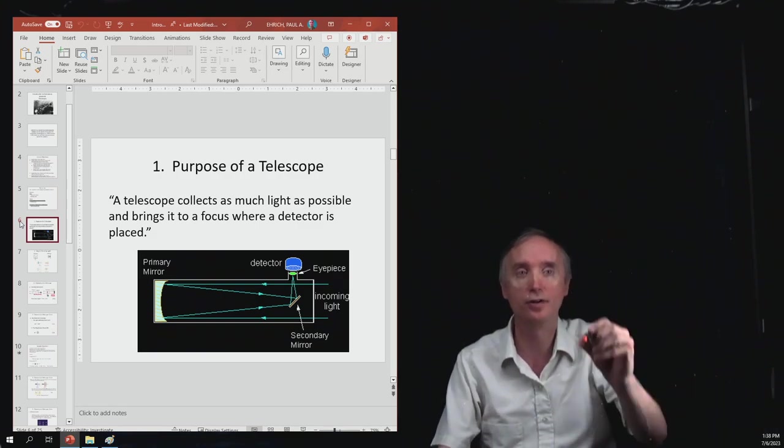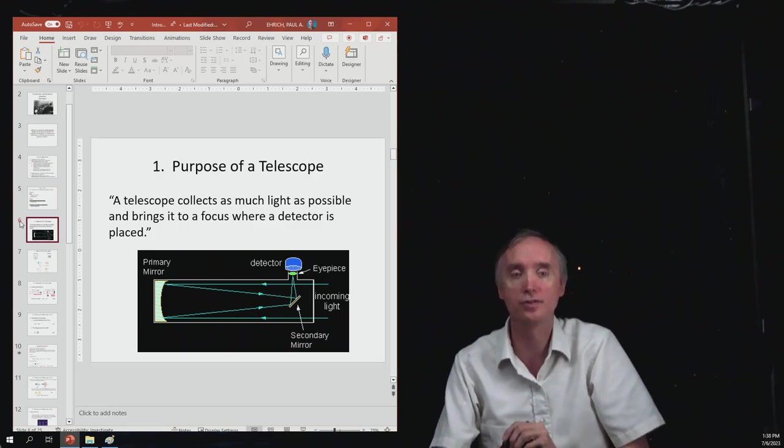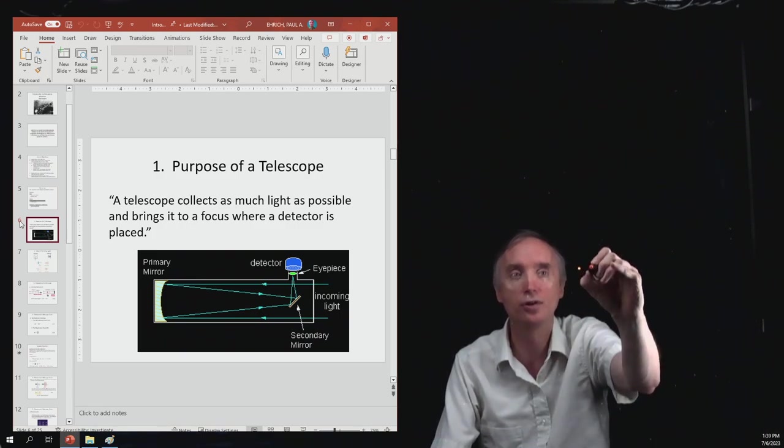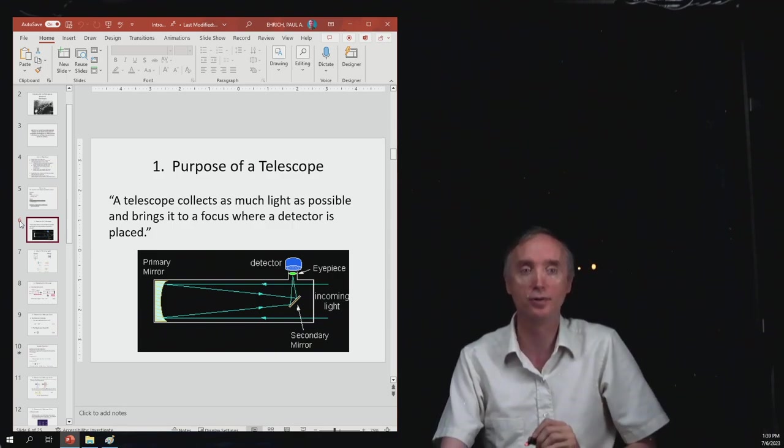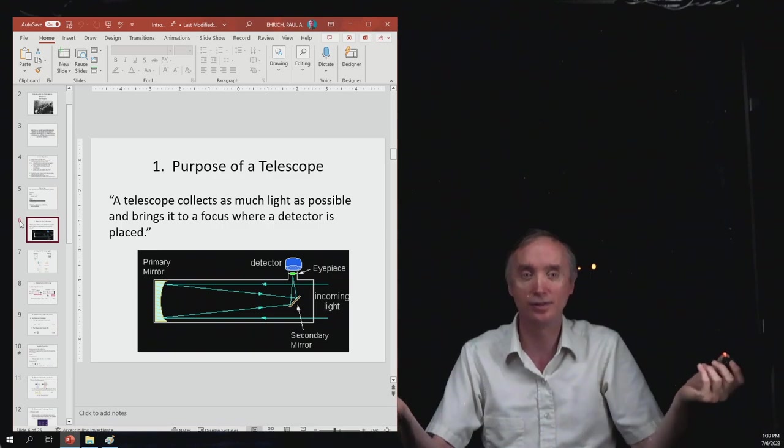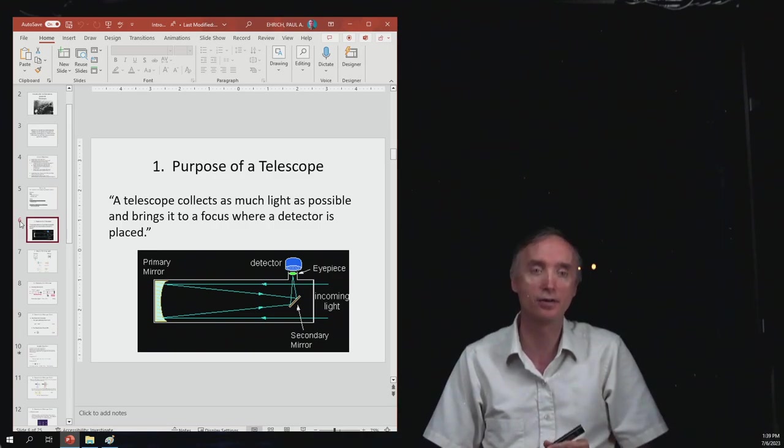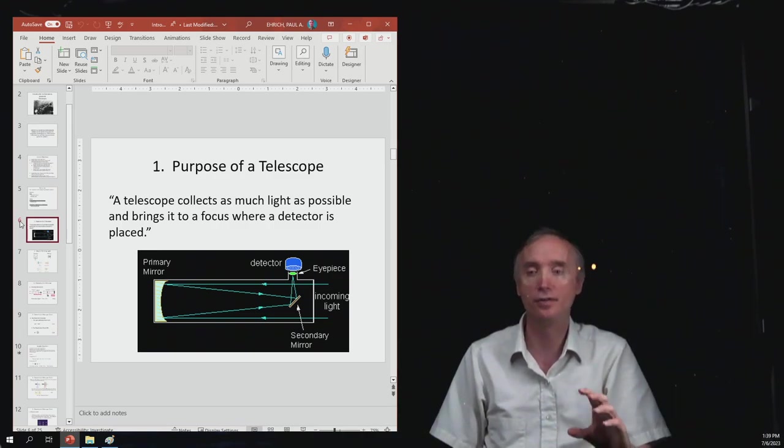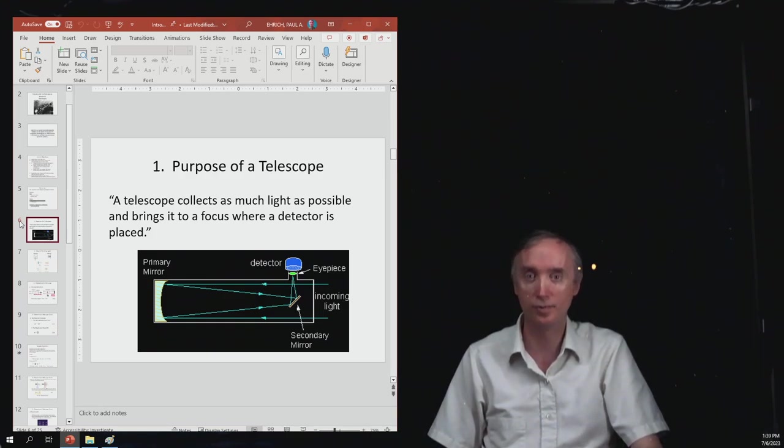For an astronomer, if the star normally looks like that, then when you look at it through your telescope, if it was a magnifying telescope, it's going to look like that. It doesn't really tell you anything about the star.